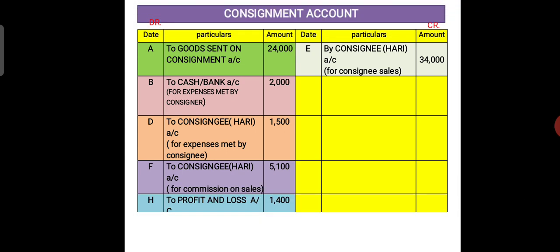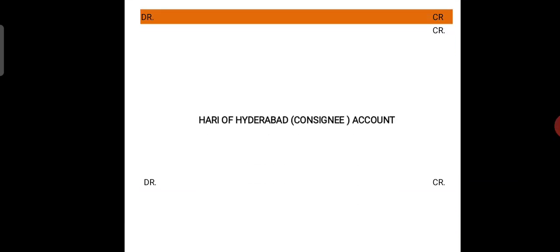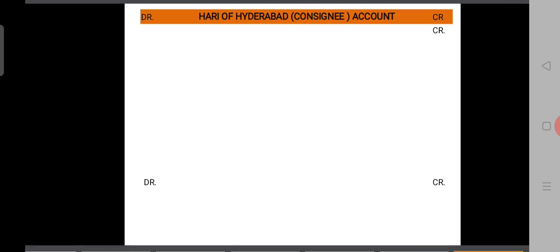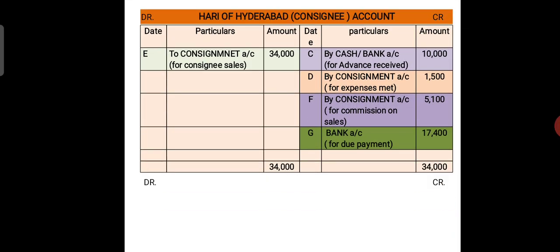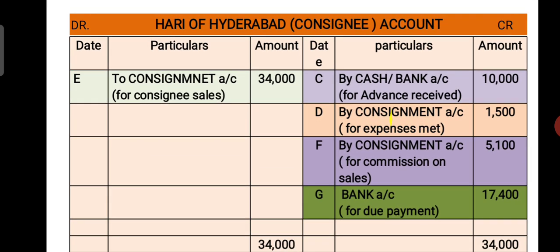The second account is Consignee Account. Consignee here means Hari of Hyderabad. On the debit side we take total sales he made — Consignee Sales Rs. 34,000. On the credit side: advance payment by Cash or Bank Account Rs. 10,000; Consignee Expenses — by Consignment Account Rs. 1,500; and Commission on Sales — by Consignment Account Rs. 5,100. The difference is the due amount: Rs. 17,400.